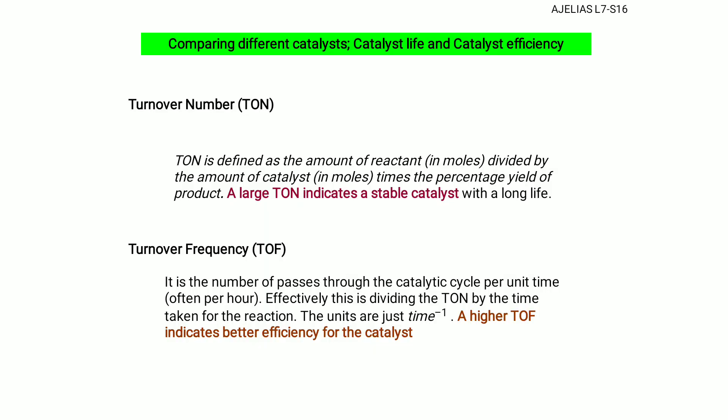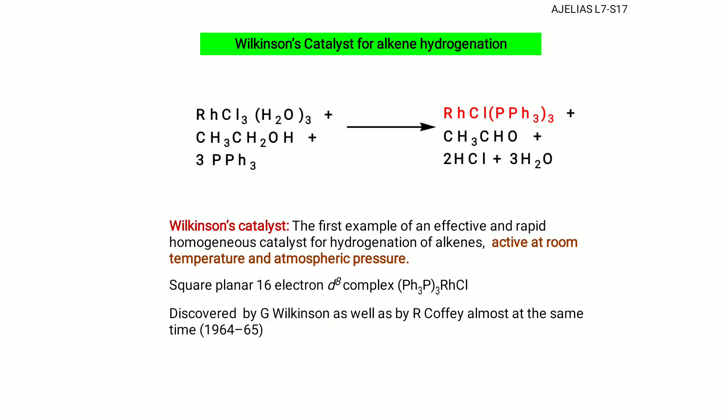Turnover number (TON) = moles of reactant ÷ moles of catalyst × percentage yield of product. A large TON indicates a stable catalyst with a long life. Turnover frequency (TOF) = TON ÷ time taken for the reaction (units: per hour or per time). A higher TOF indicates better catalyst efficiency.